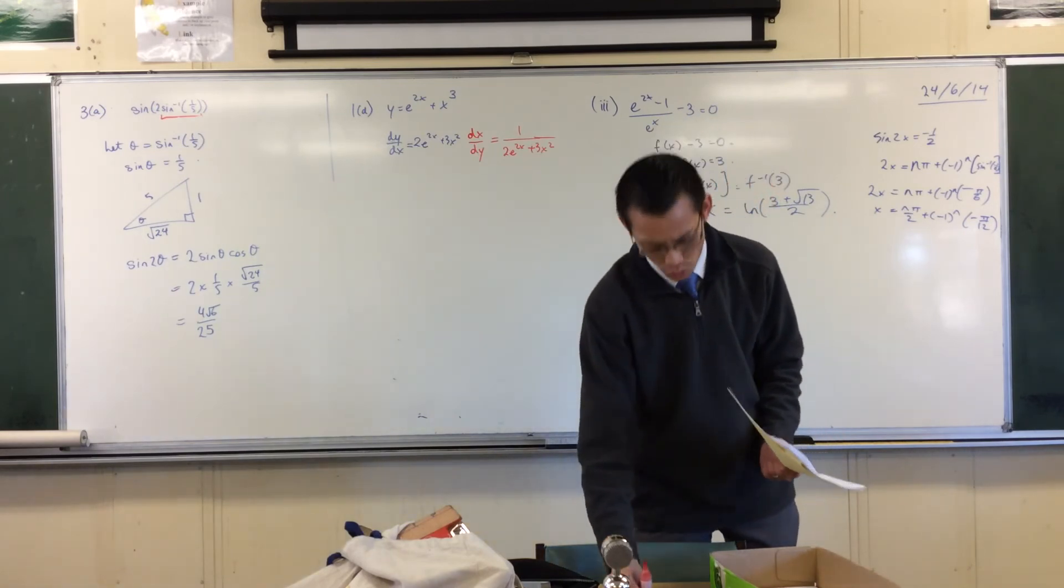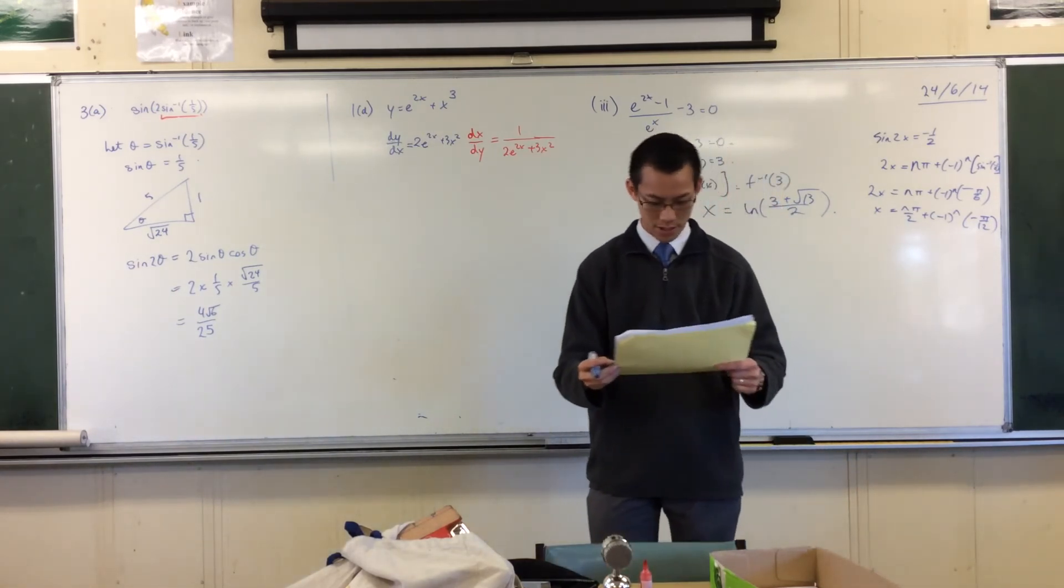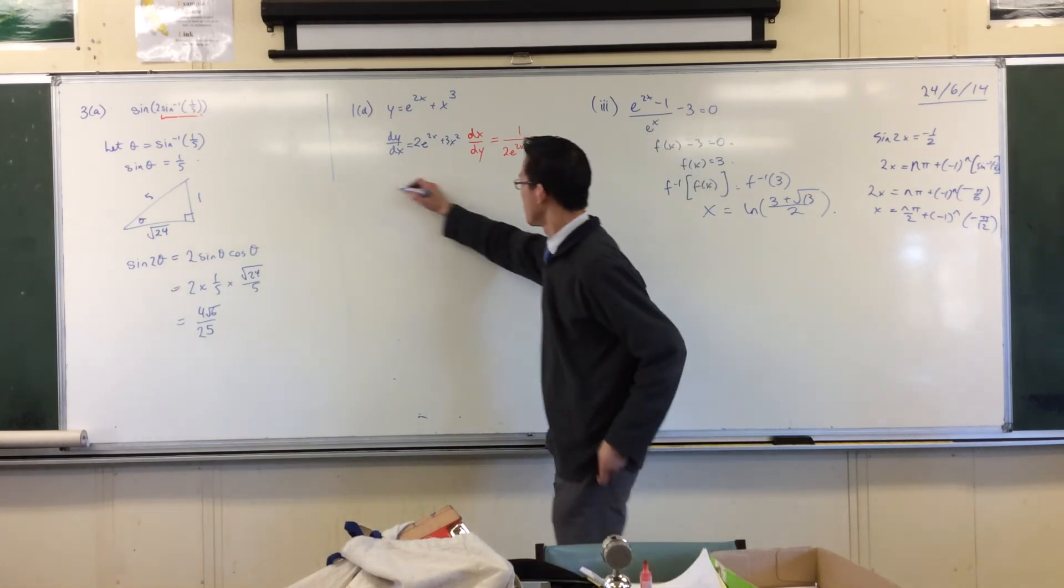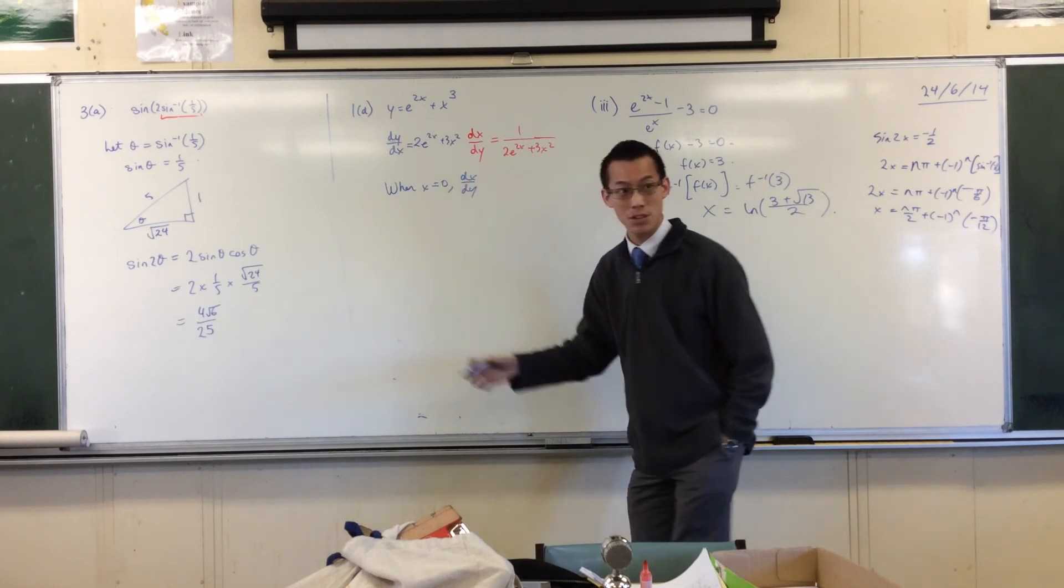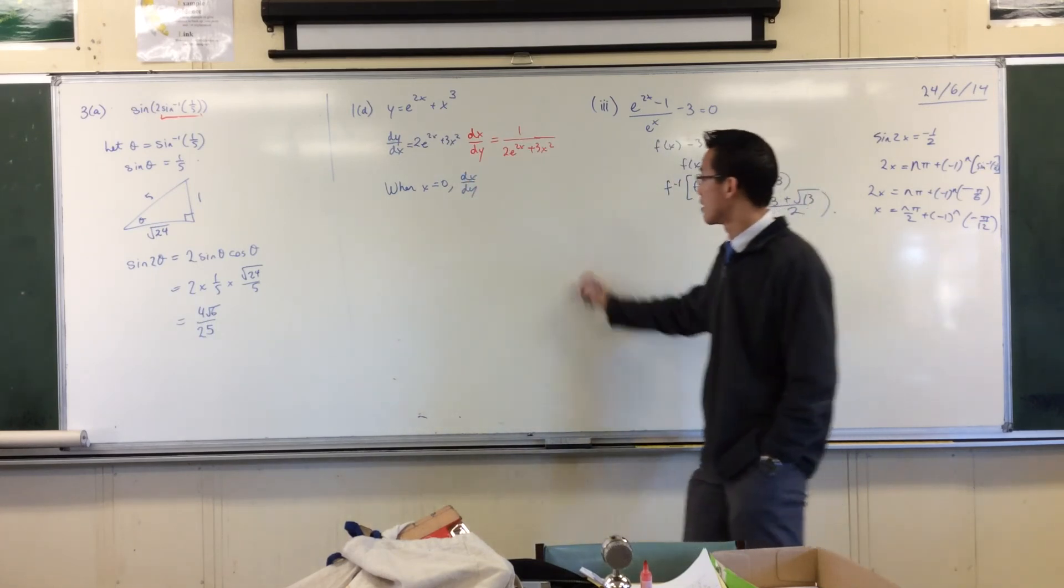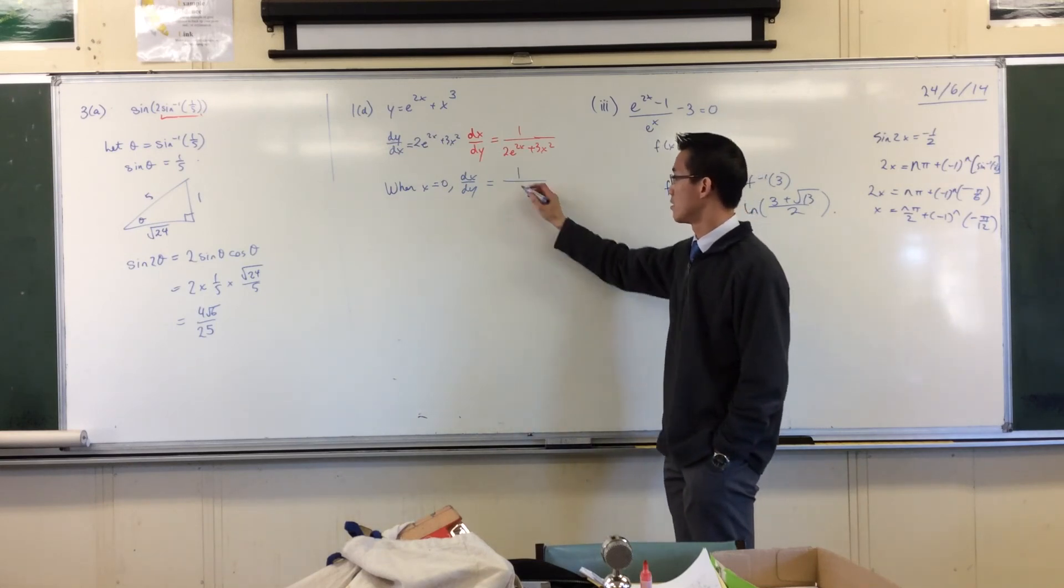See? Okay. So now I want to know at a particular value of x, I think it's 0, isn't it? When x equals 0. So then all I have to do is sub it into this, which is the derivative of the inverse. Okay? Which is, let's see, a half.